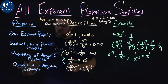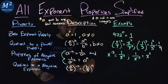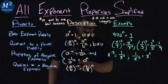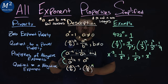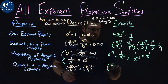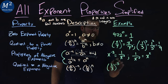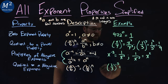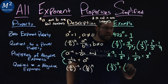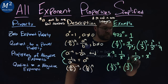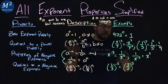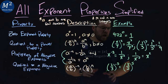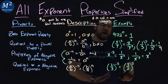Lastly, the quotient to a negative exponent: a over b all to the negative n power equals b over a to the n power — notice that a and b swap places. For example, two thirds to the negative fifth power is rewritten as three halves to the positive fifth power. From there you could apply the quotient to a power property to simplify further.